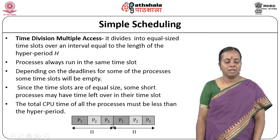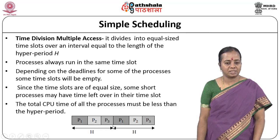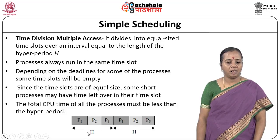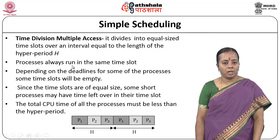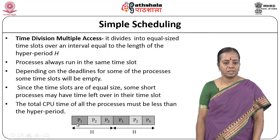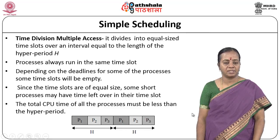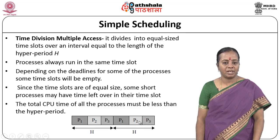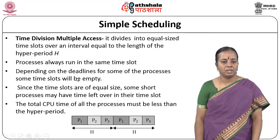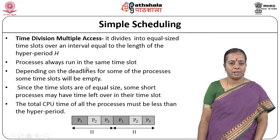With fairness, all time slots are allotted for the different processes available in that particular system. The processes always run in the same time slot — if P1 is running in time slot 1, it will run in time slot 1 of the next hyper period as well, meaning it occurs periodically. If P1 occurs in time slot 1 in hyper period 1, in hyper period 2 it will also be in time slot 1. Similarly P2 will always run in time slot 2.